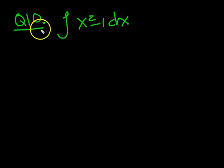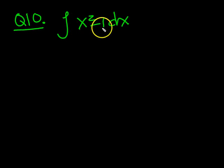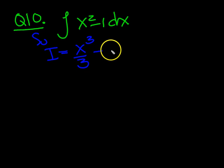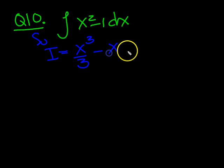OK guys, let's have a little look at question 10 then. It's the integral of x squared minus 1. So i equals x squared — it's a power, so you raise the 2 by 1 to 3, divide by that number. Minus 1 is a constant, so constants integrate to the number times x, which is minus 1 lot of x, plus a k at the end.